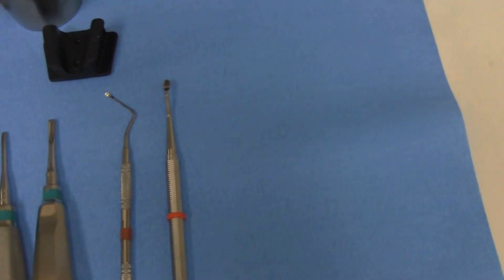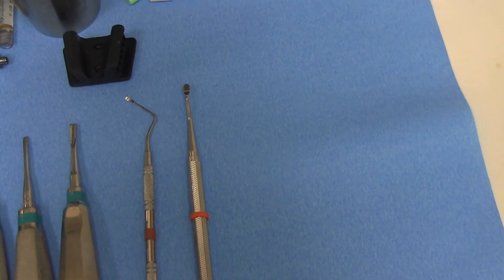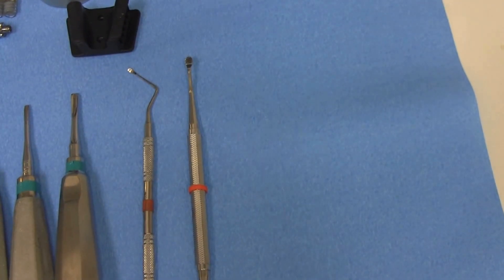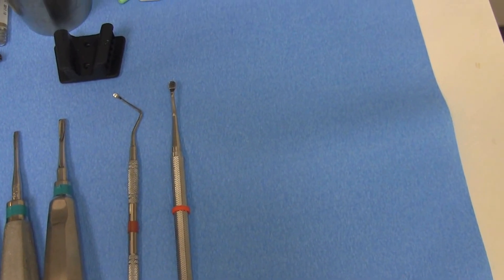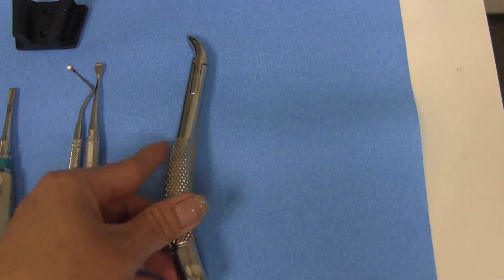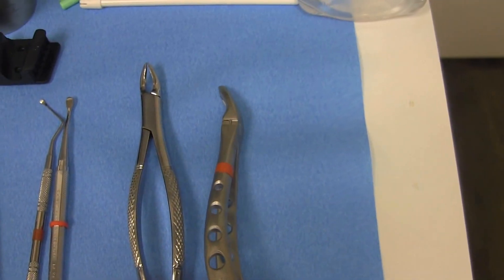So you have your bone file. And then you want to put out your forceps. So we have two different types of forceps that we have in the office. We have this one, and then we have ones with holes in them.